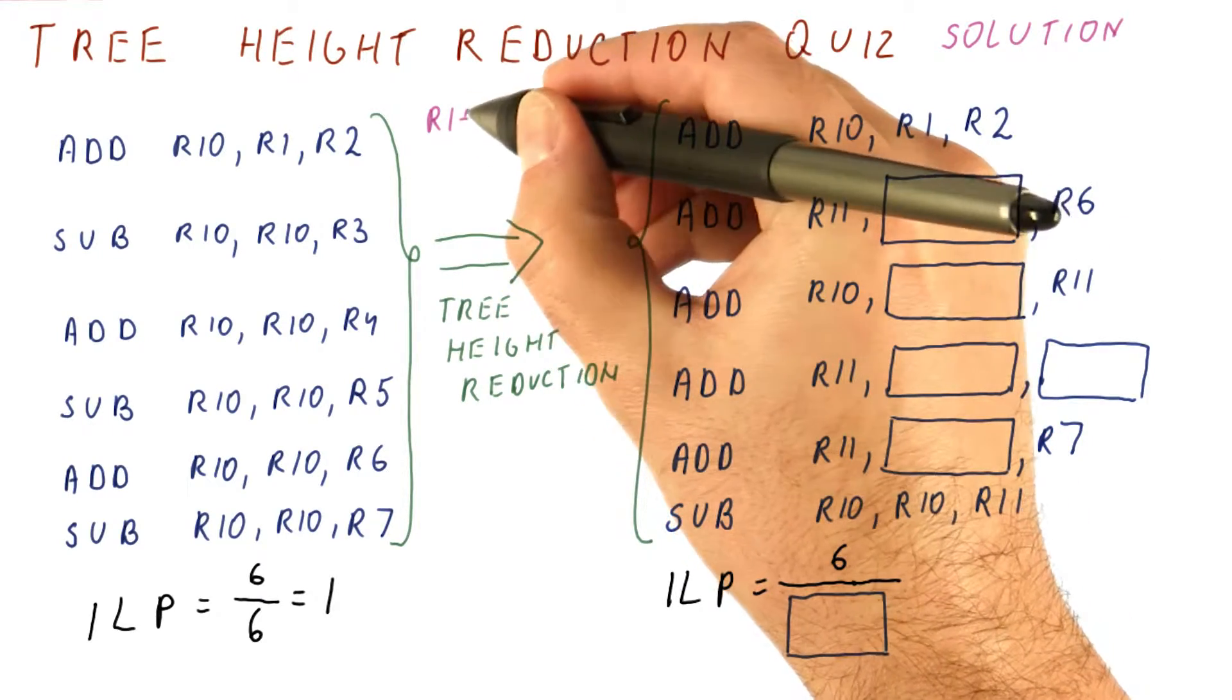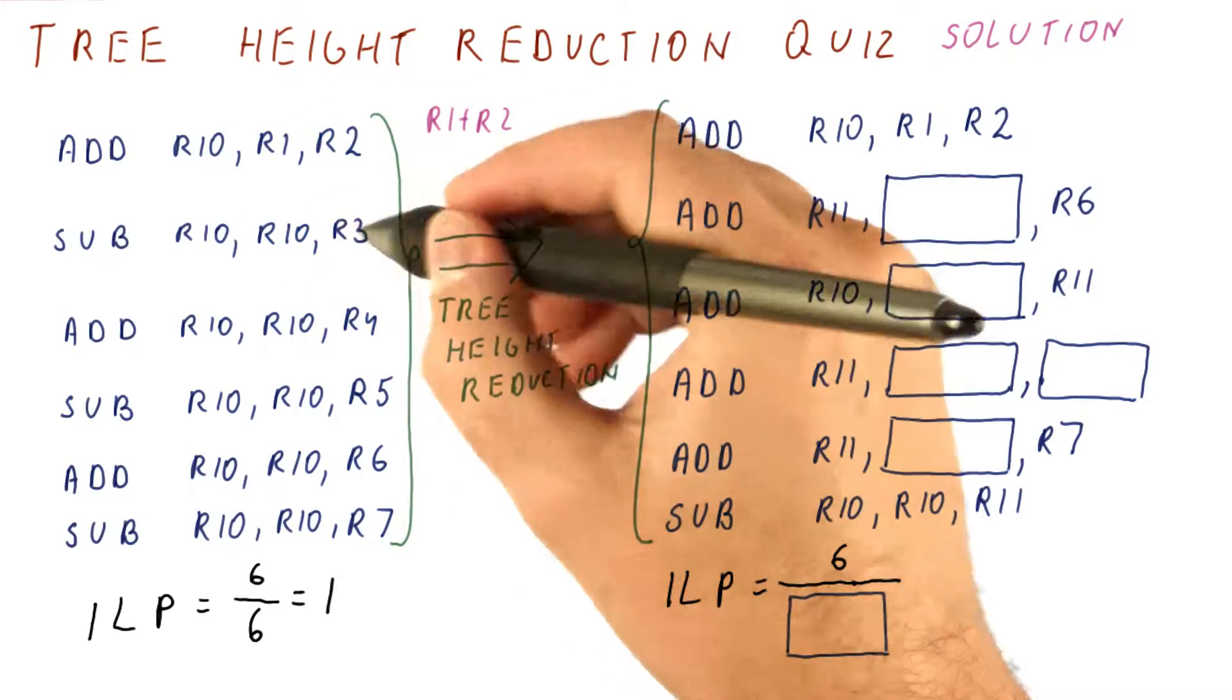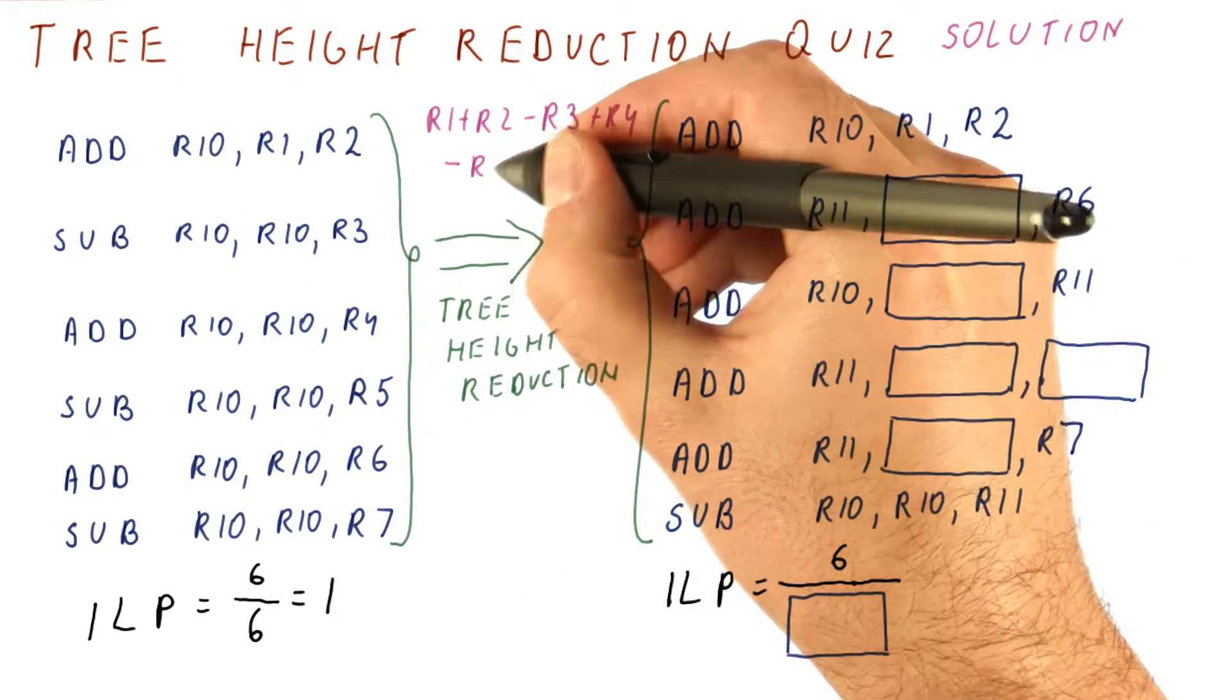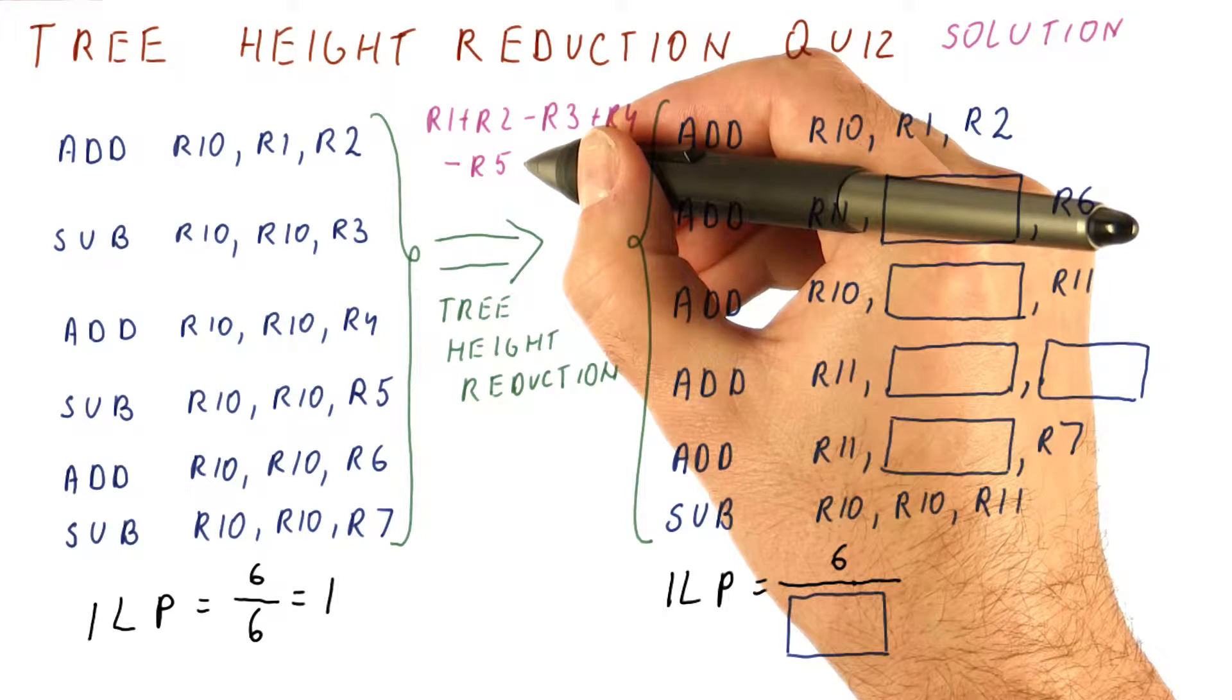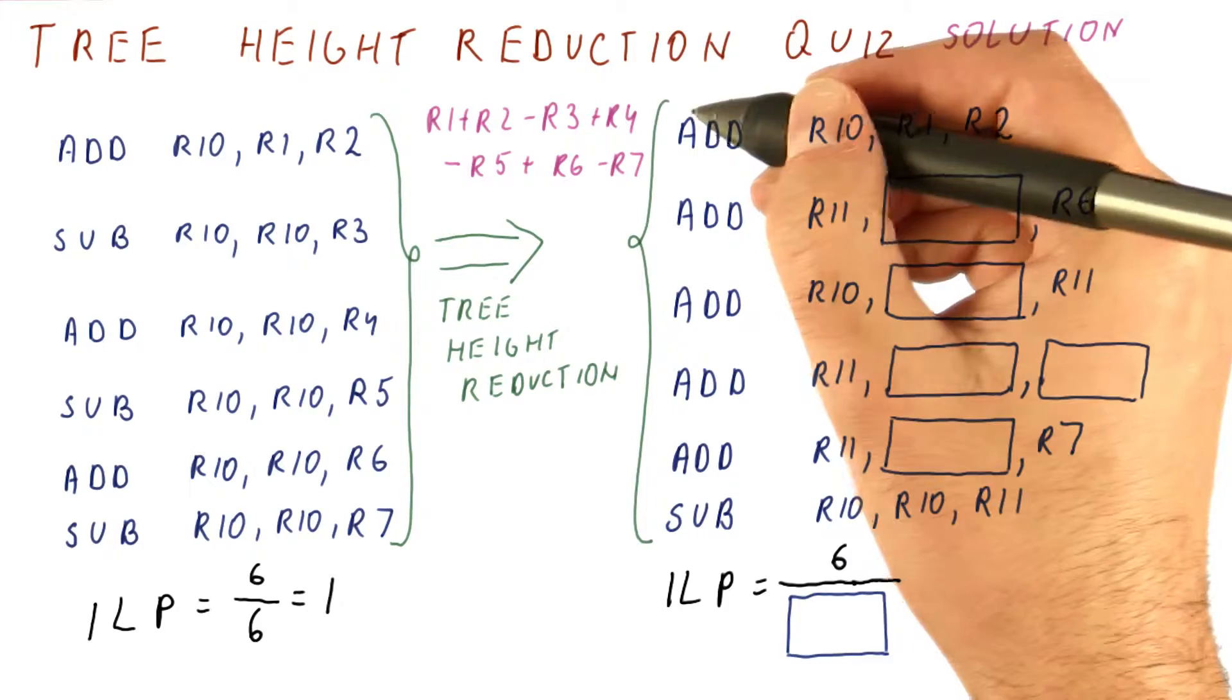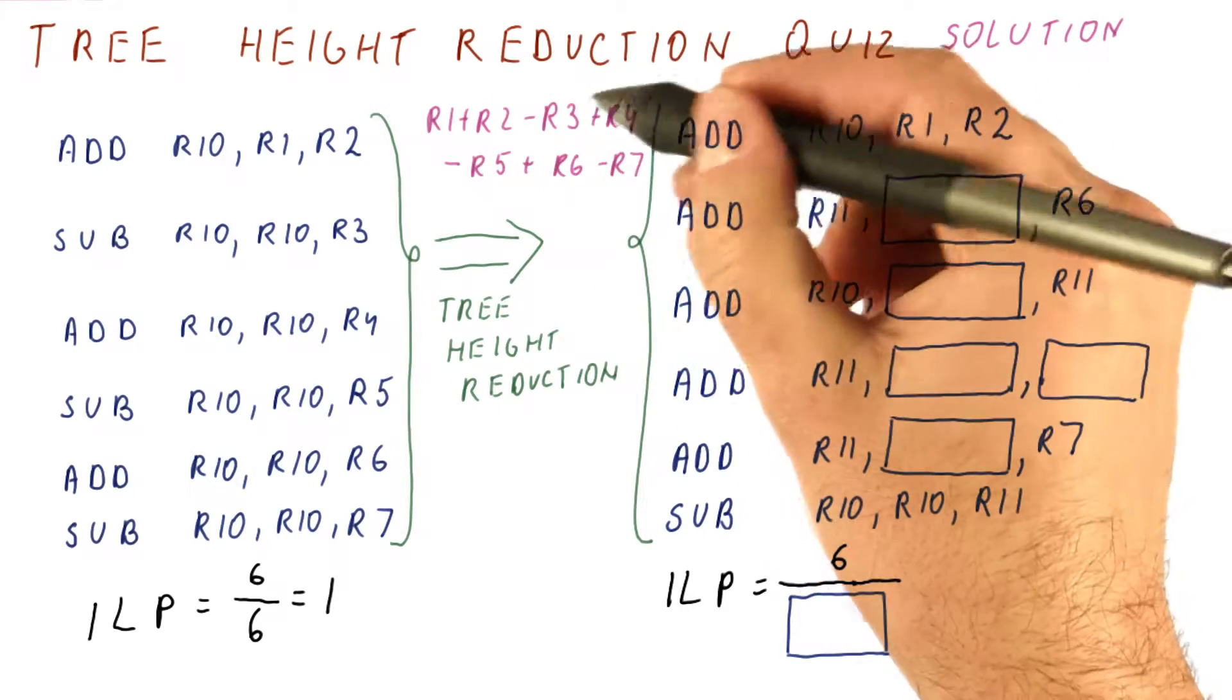We have R1 plus R2, put the result in R10, then subtract R3, then add R4, then subtract R5, then add R6, then subtract R7. So this is what we are trying to compute.